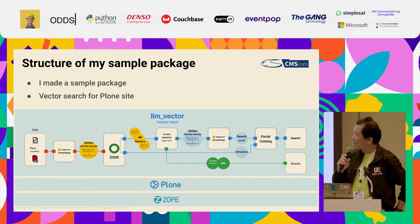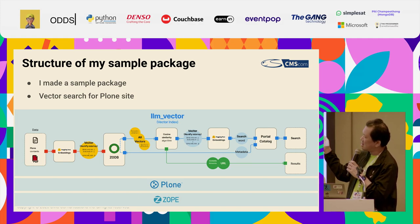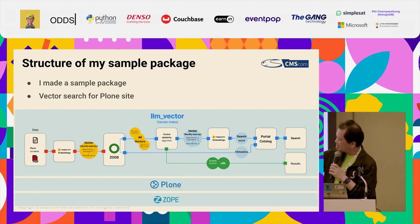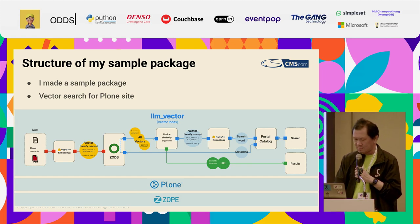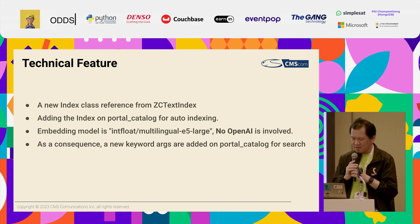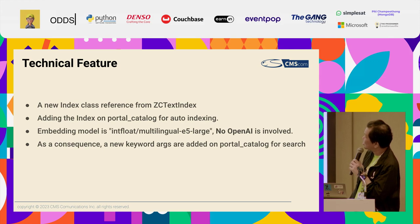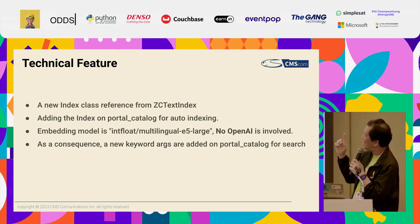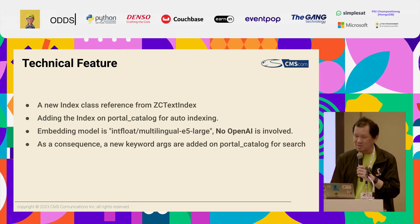The structure of my sample package is almost the same as vector search. I'm using PROM. PROM base is ZOP, and ZOP has an index system. The technical features include a new index class, referenced from the ZC text index, and adding a portal catalog for auto-indexing. The embedding model is the same.